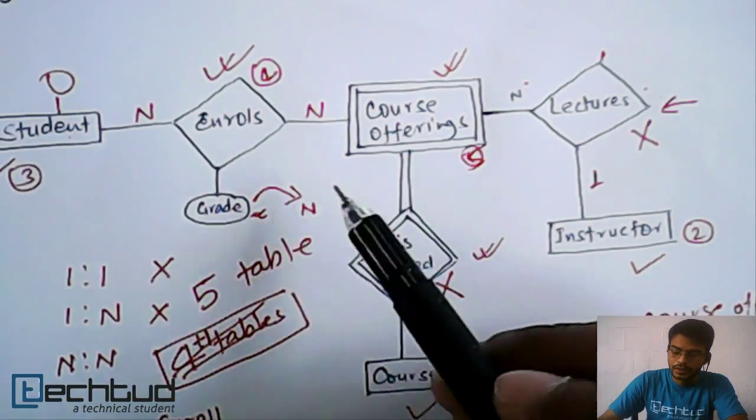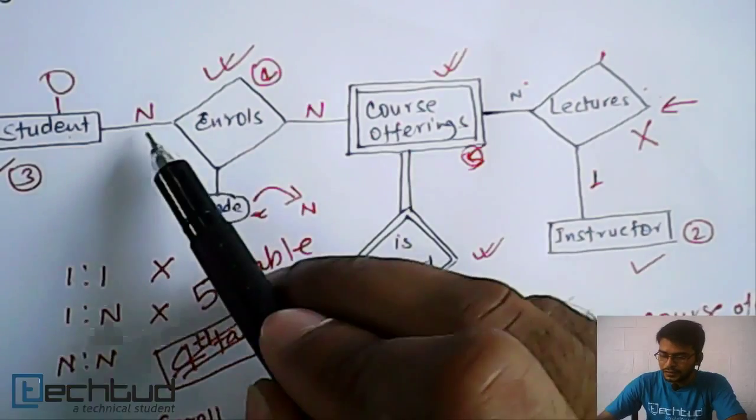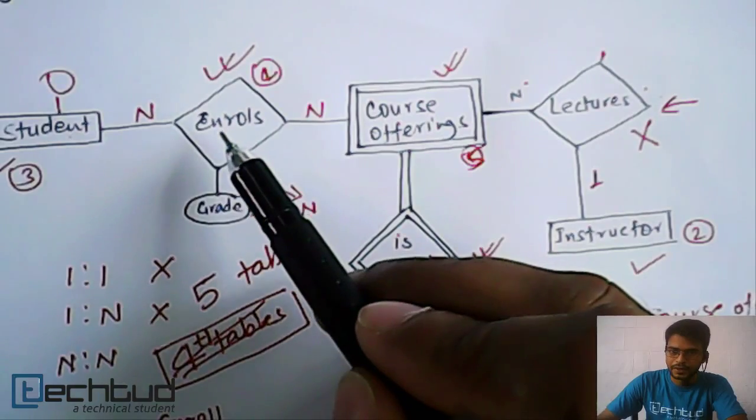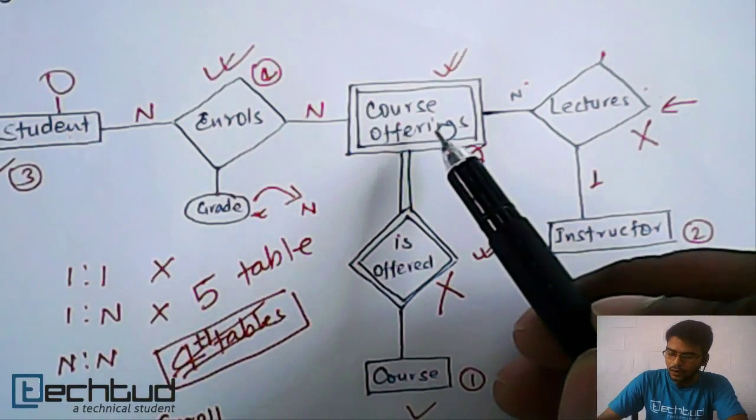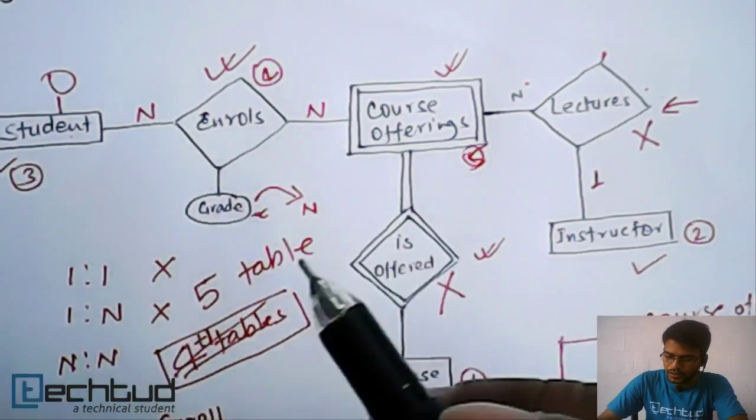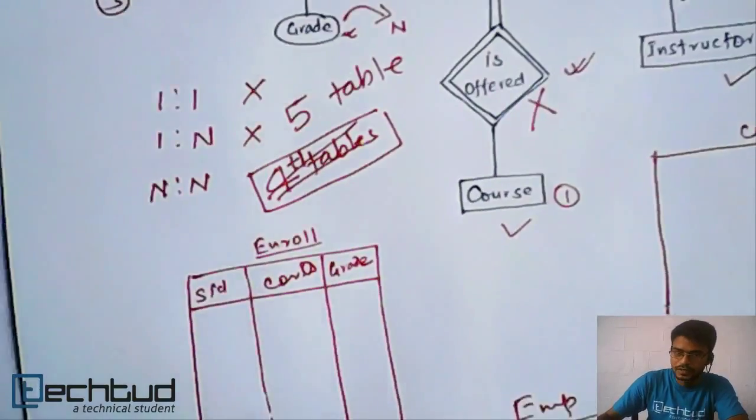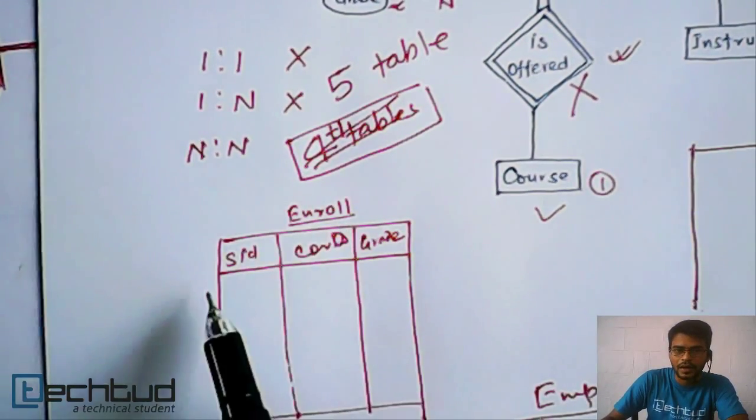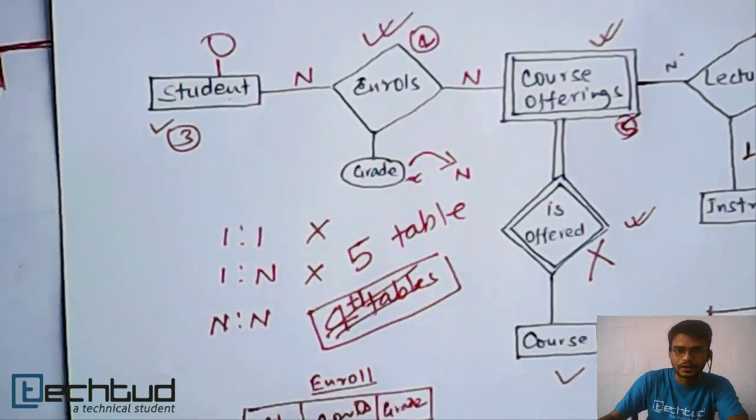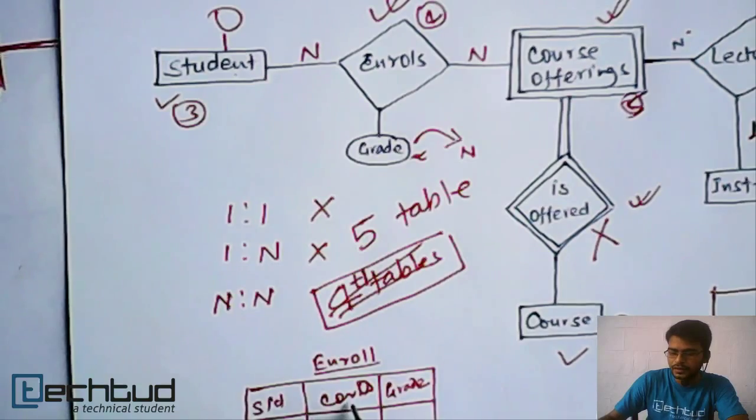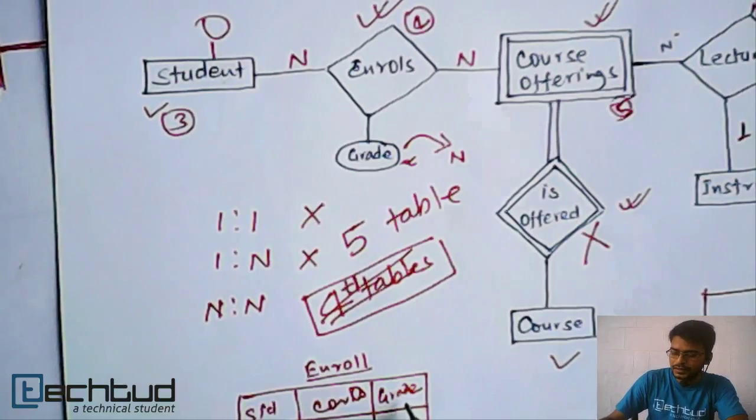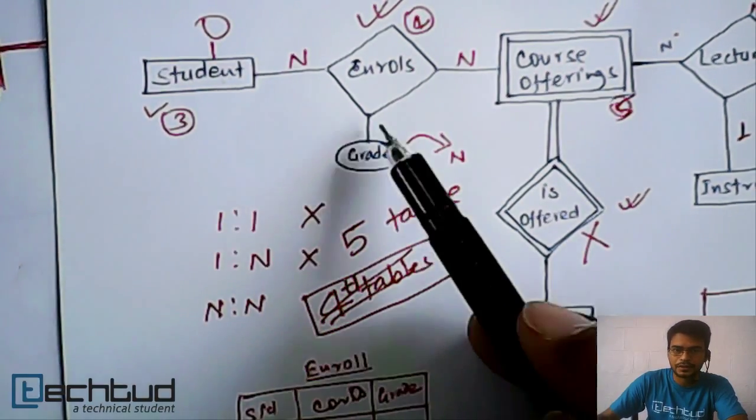There may be a doubt that if it is an N to N relationship, this is fine. We will have a separate table for enroll. But what will we store in this enroll table? This is our enroll table. We will store SID which is student ID from this student primary key attribute, and this is course ID which is from this course offering, and then this is grade, the attribute of this relationship.